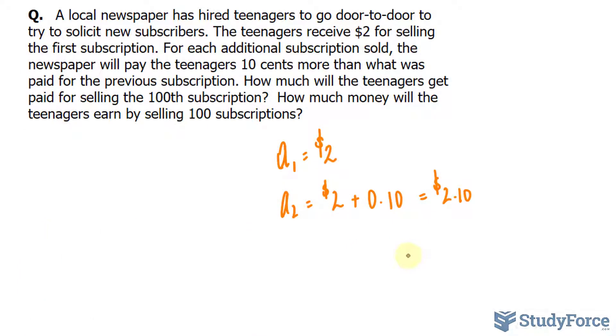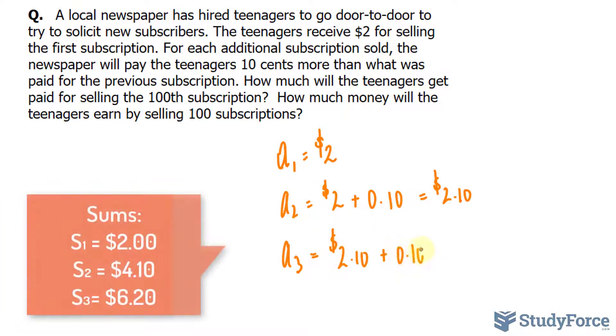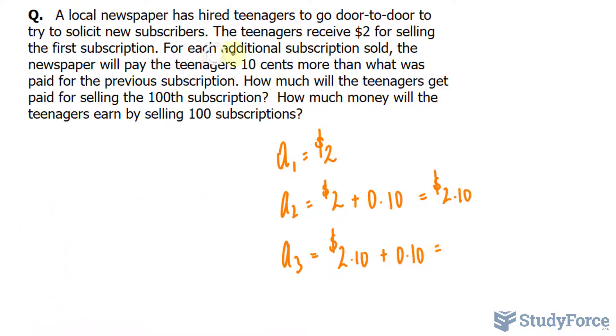In case you're still confused, let's do one more for good measure. If they sell a third subscription, they will get $2.10 plus $0.10 more than that. Because it says right here, for each additional subscription sold, the newspaper will pay the teenagers $0.10 more than what was paid for the previous subscription, being this one. So they end up earning for the third subscription $2.20.